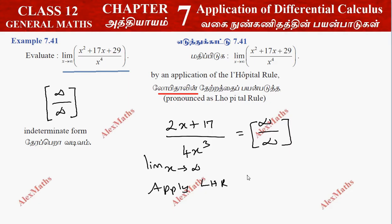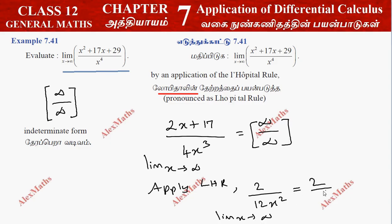Apply L'Hôpital's Rule. The numerator derivative is 2 — the order of 2x plus 17 is 2. The denominator is 12x squared. Now the limit extends to infinity: the numerator is 2, the denominator is infinity. Anything over infinity is 0. So the answer is 0.